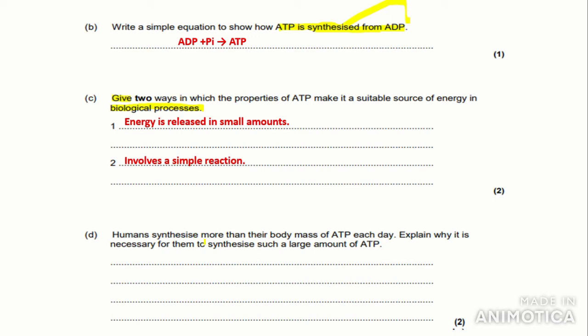The next part of the question: 'Humans synthesize more than their body mass of ATP each day. Explain why it is necessary for them to synthesize such a large amount of ATP.' As this is an explain question, we need to write why something happens, not just what happens. ATP is an immediate energy source so it is used very quickly, and it is released in small amounts. This obviously means that a large amount of ATP must be synthesized to compensate for this property.